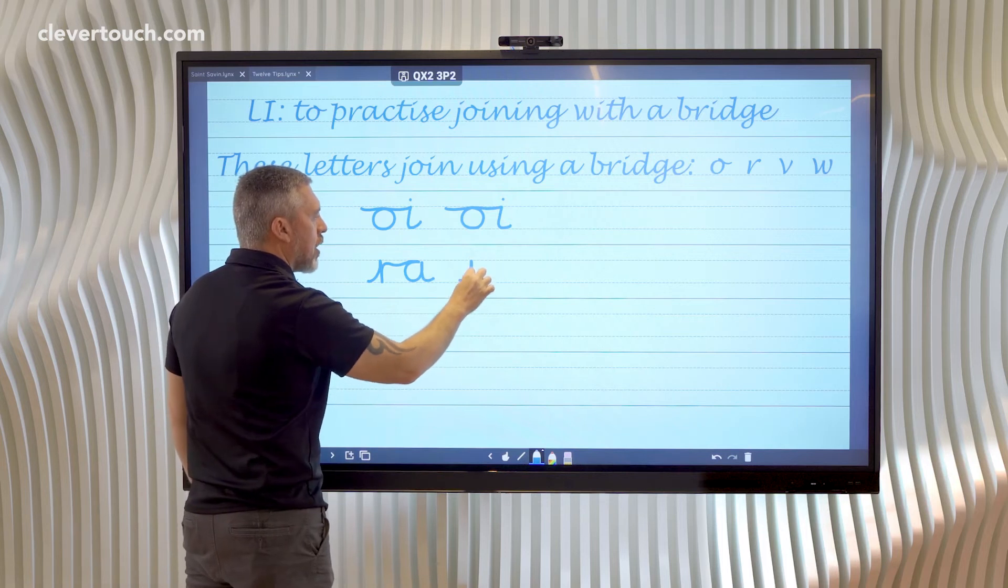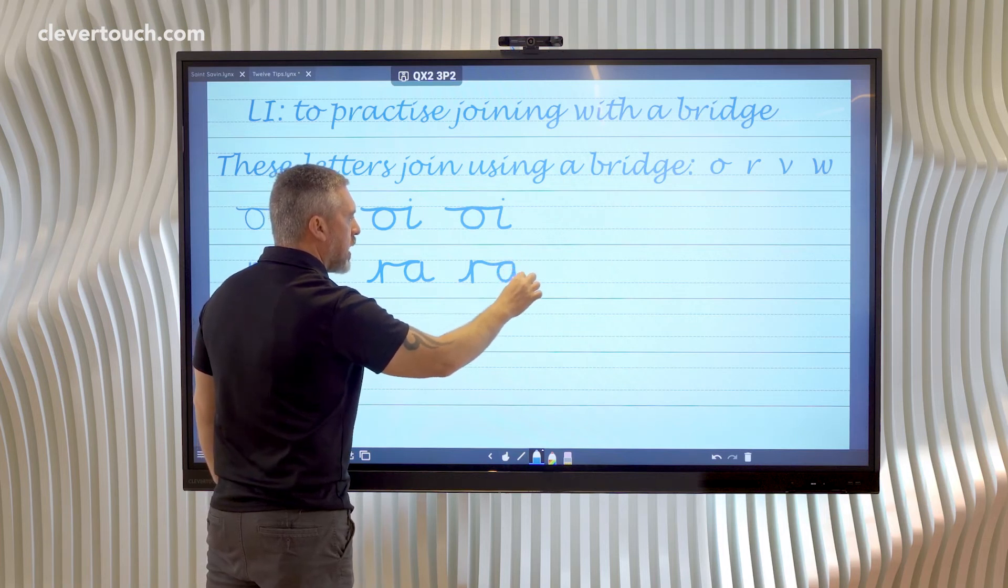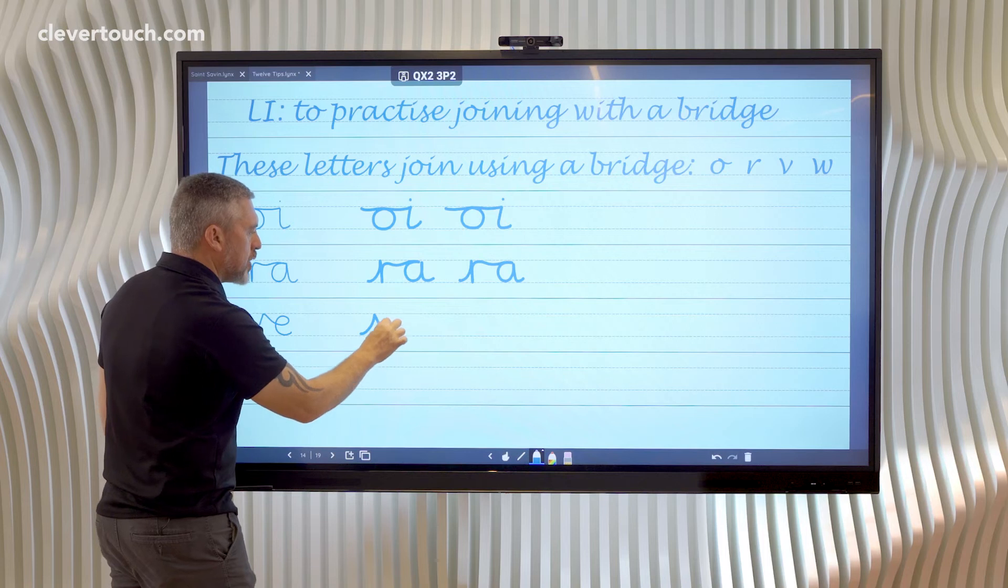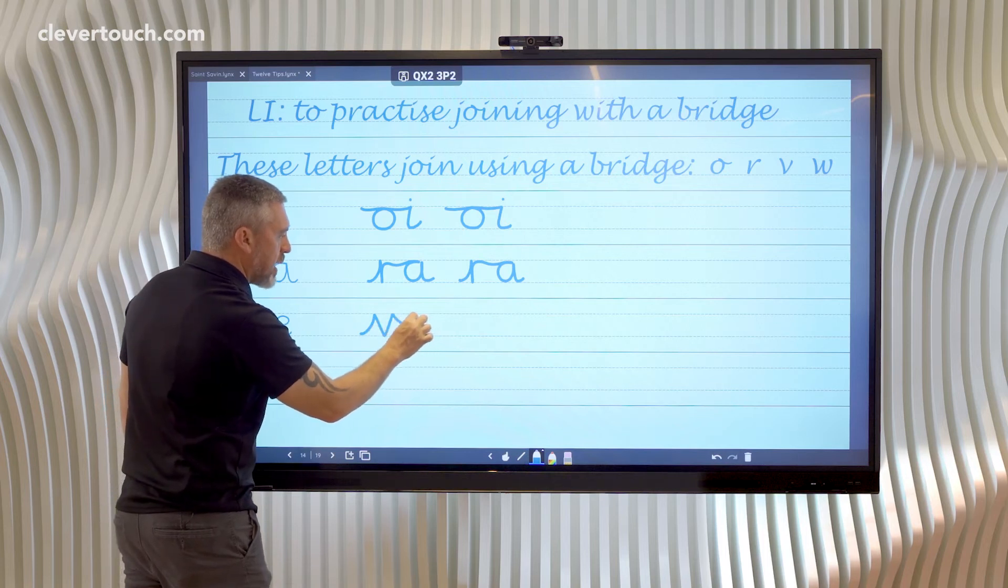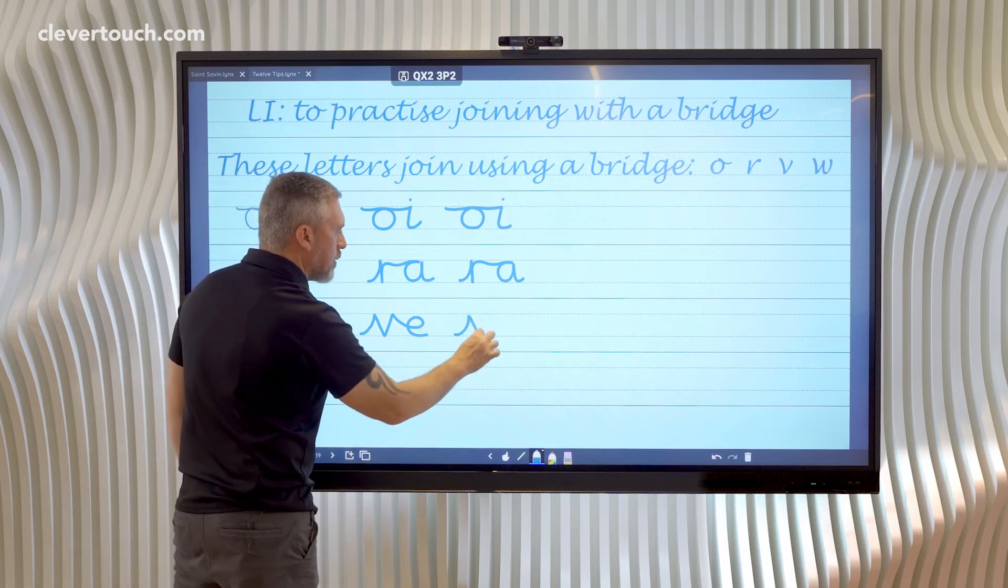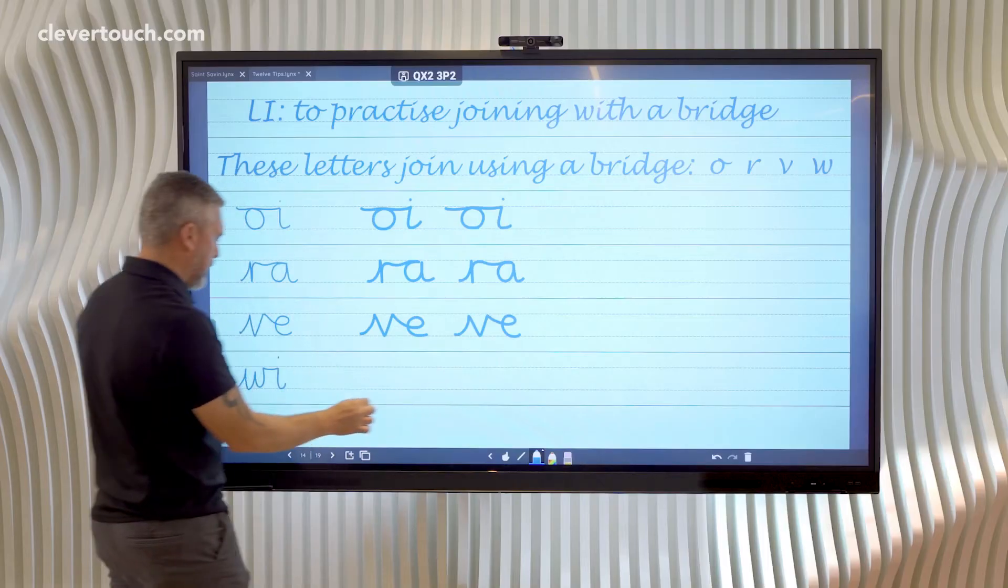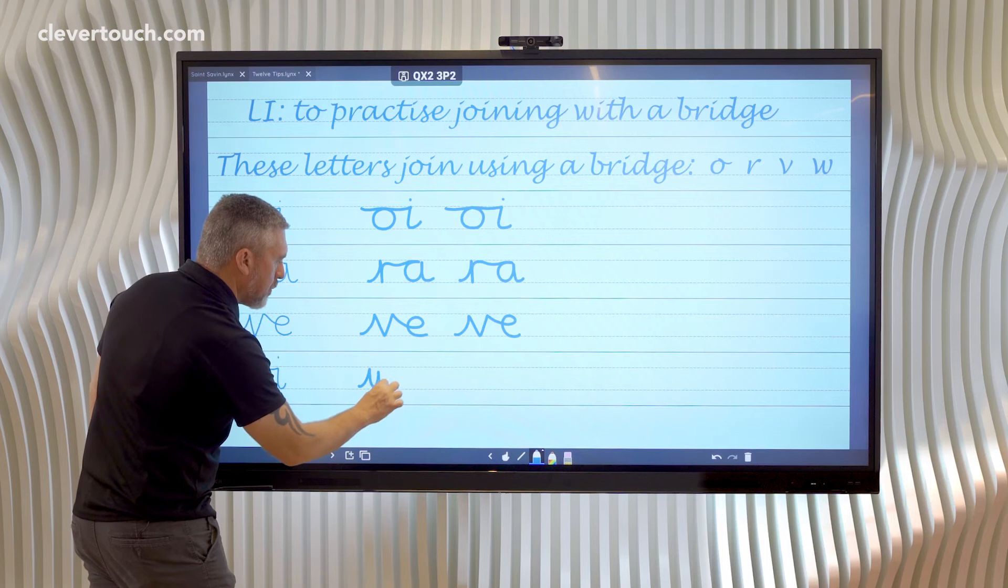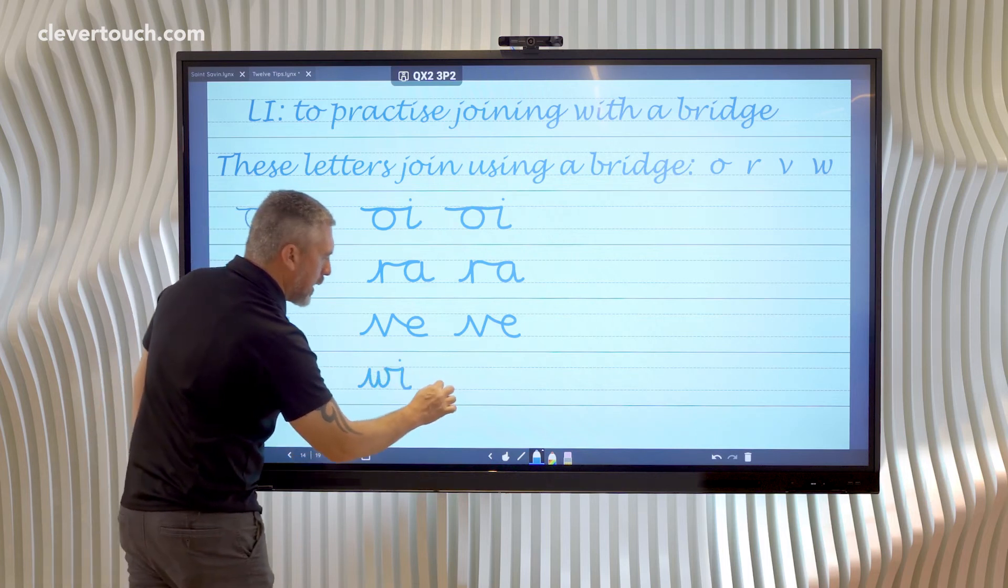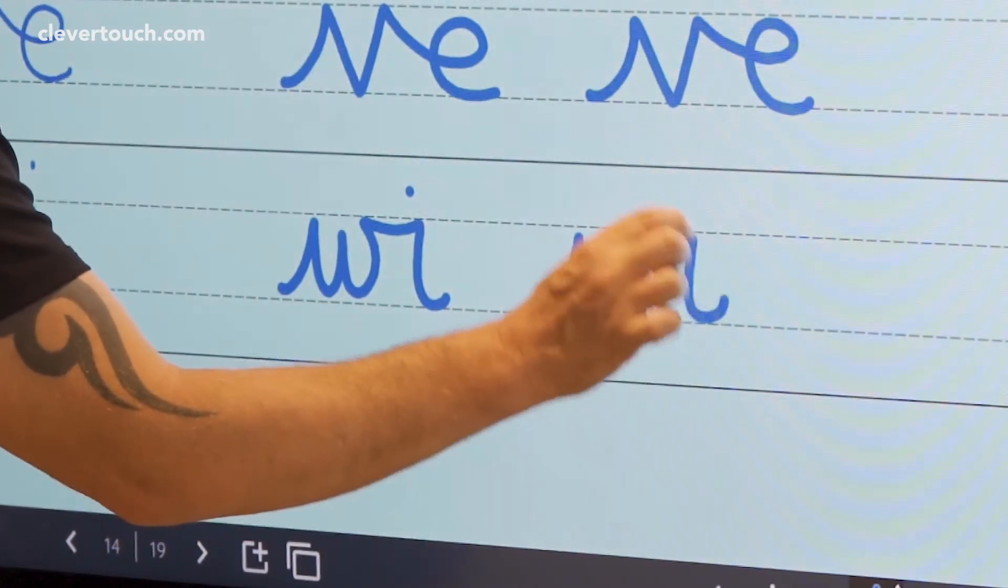Show you again: R, bridge across, come back to do my A. With a V, finish the V and the bridge. This time it's going to sweep down into the E. Again, the V, go across and sweep down into the E. And finally, W, bridge across to the letter I. It's a good way of keeping your letter I a short letter. Keep practicing.